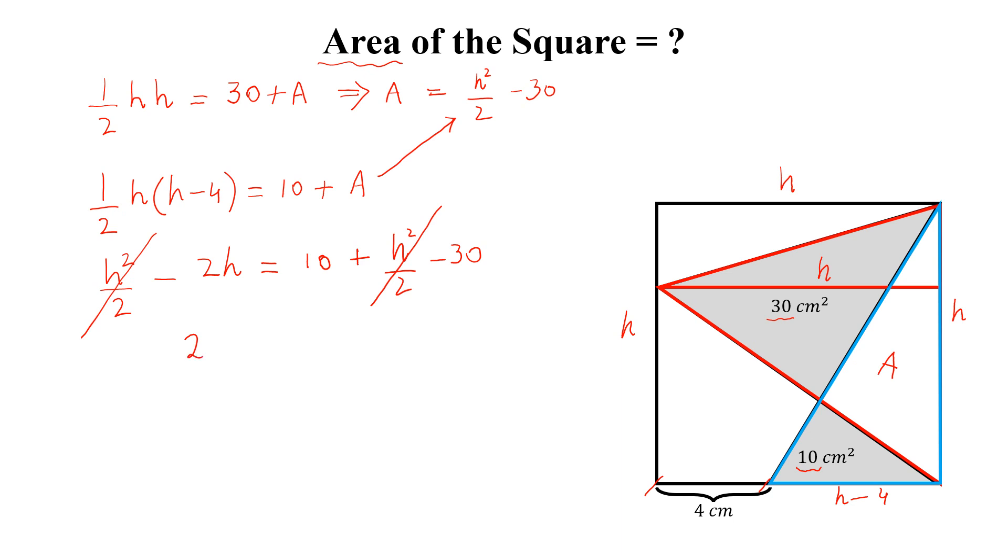2h equal to 20. Dividing both sides by 2, h is equal to 10, and the area of the square is h square equal to 100 centimeter square.